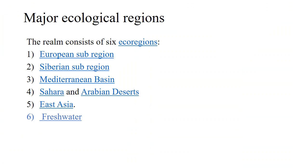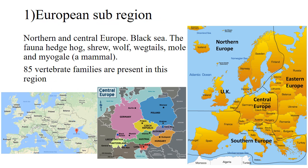The major zoogeographic subregions of the Palearctic region are: European subregion, Siberian subregion, Mediterranean region, Saharan and Arabian deserts, East Asia, and freshwater ecoregions — six ecoregions in total. The European subregion consists of Northern and Central Europe and the Black Sea. Countries in Central Europe include Germany, Czech Republic, and Austria; in Northern Europe — Finland, Sweden, Norway, etc.